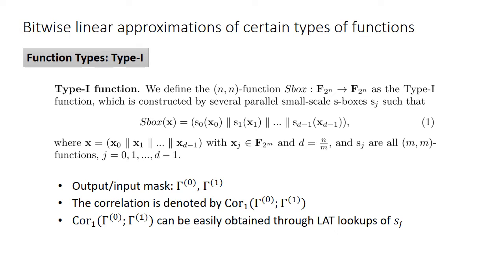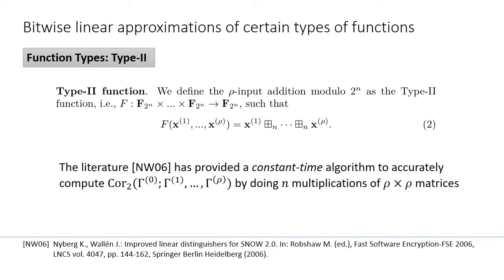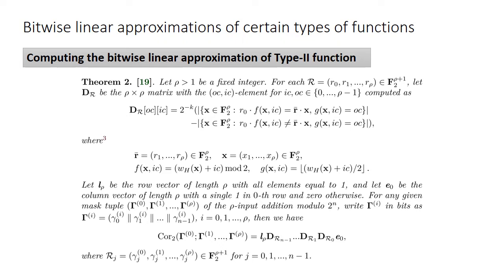Type 1 function is constructed by several parallel small S-boxes. For any given input and output mask, correlation 1 can be easily obtained through linear approximation table lookups. Type 2 function represents addition modulo 2 to the power of n with several inputs. In the literature NW06, the authors show that for any given input and output mask, correlation 2 can be obtained by doing several matrix multiplications using some pre-computed matrices. This is a constant time procedure, as shown in Theorem 2.